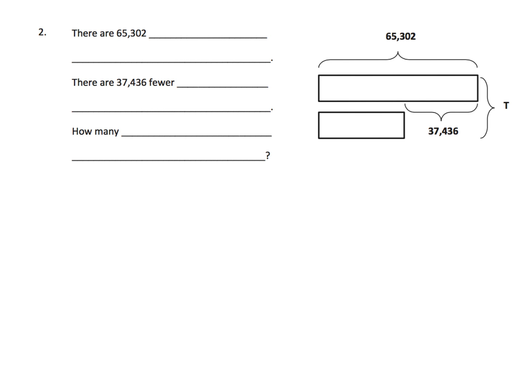So now I'm looking at this and I see they've taken away some labels, but I can see by this tape diagram, here's the tape and it's got the value of 65,302. I see that the difference between these two lengths is 37,436. So that means this guy is less than this guy by 37,436. And it looks like this bracket here is saying, what is the total? All right, so let's go back over here and let's look at the question stems that they've given us. There are 65,302 somethings. Let's say,